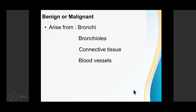Lung tumors, like any other tumours, can be divided into benign and malignant tumours. Tumours of the lung can arise from the bronchi, bronchioles, connective tissue, blood vessels, or from the pleura. However, the most common type of lung tumour is the bronchogenic carcinoma. As its name signifies, it originates from the bronchial or the bronchiolar epithelium.